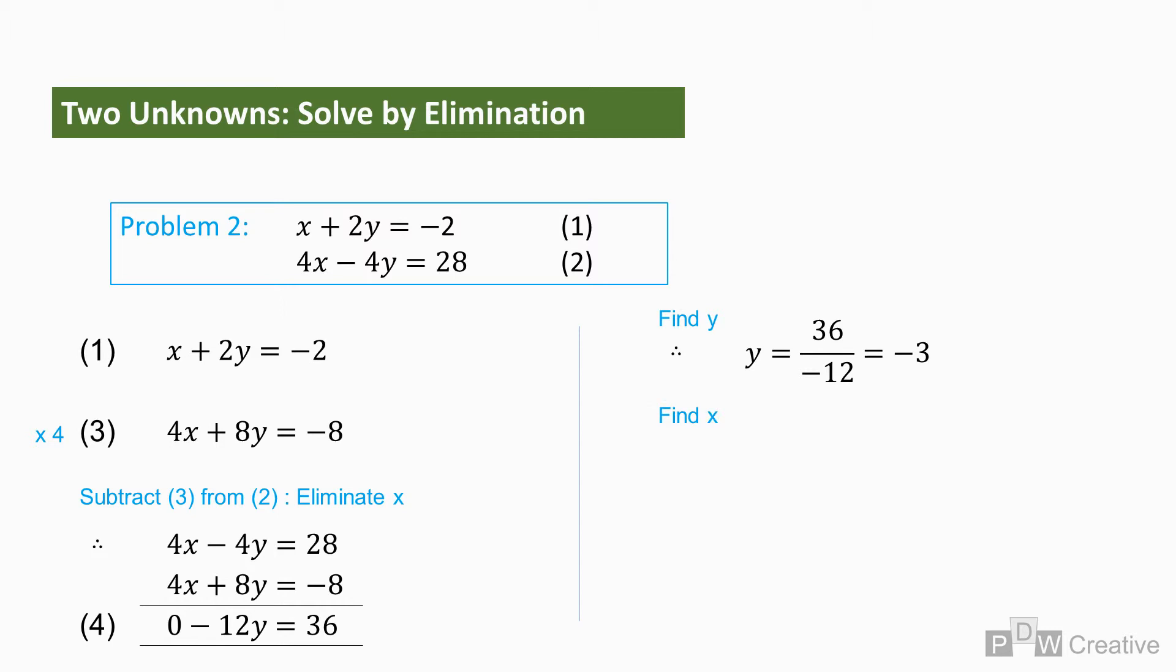And now finally, we can go back and find x. From equation one, x plus minus six equals minus two. And by reworking, x equals four. So now we've used both substitution and elimination methods to find x and y variables.